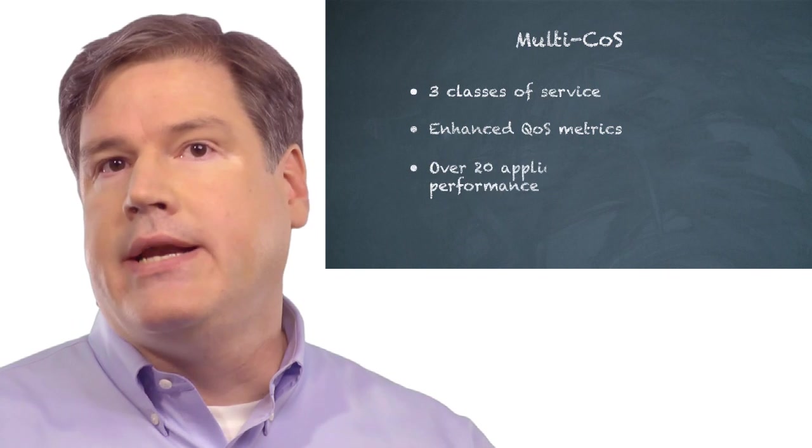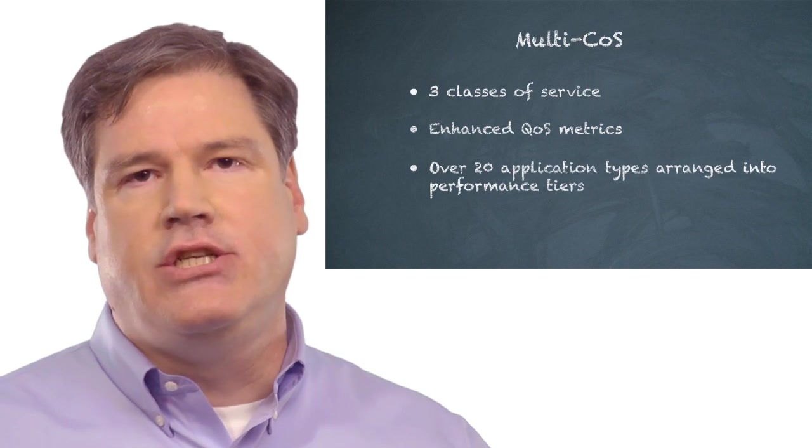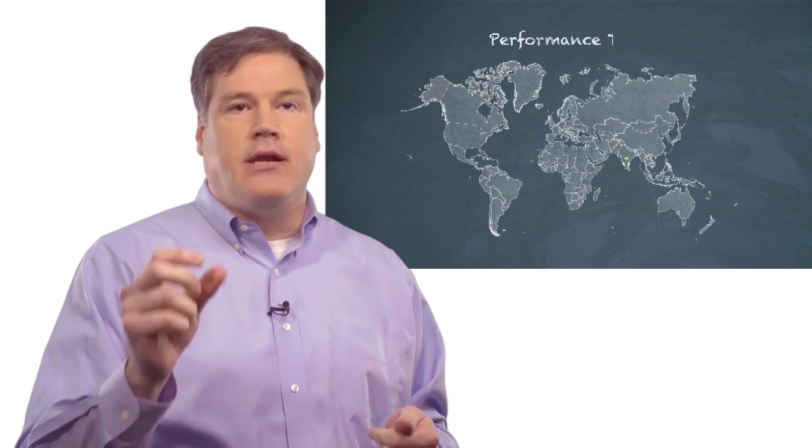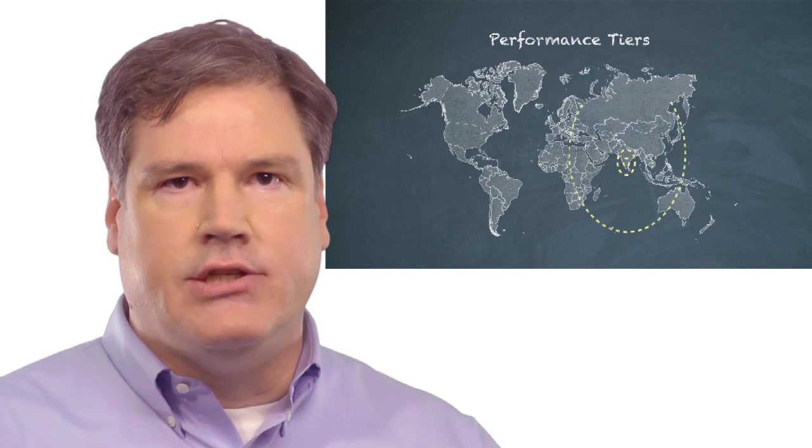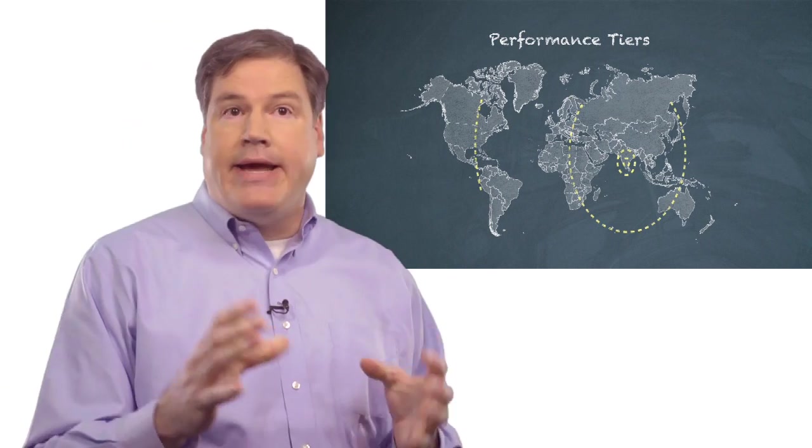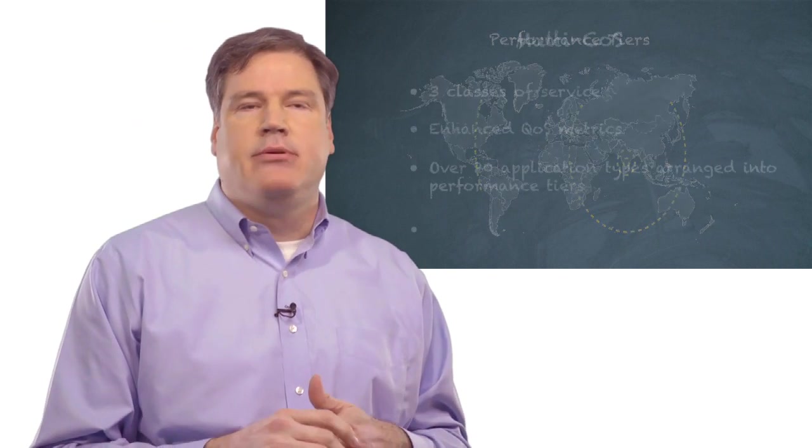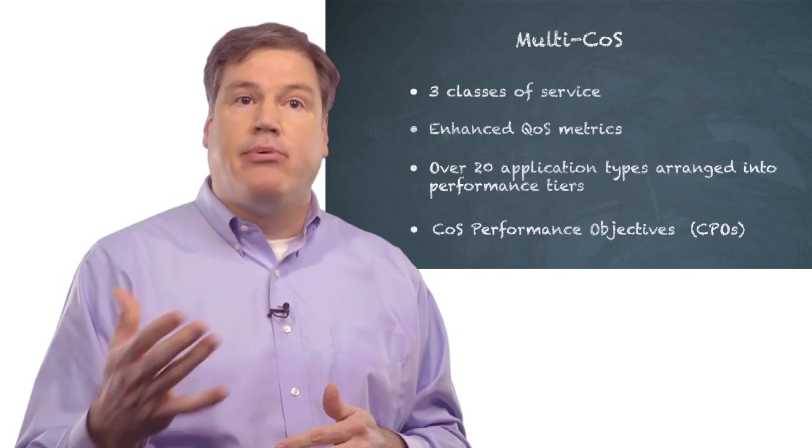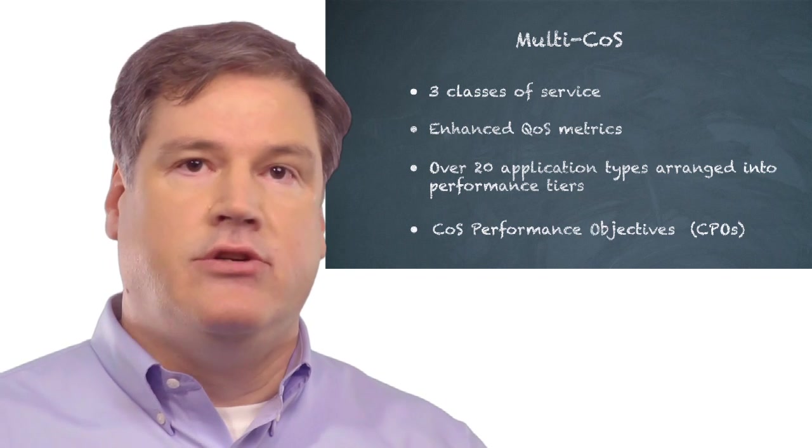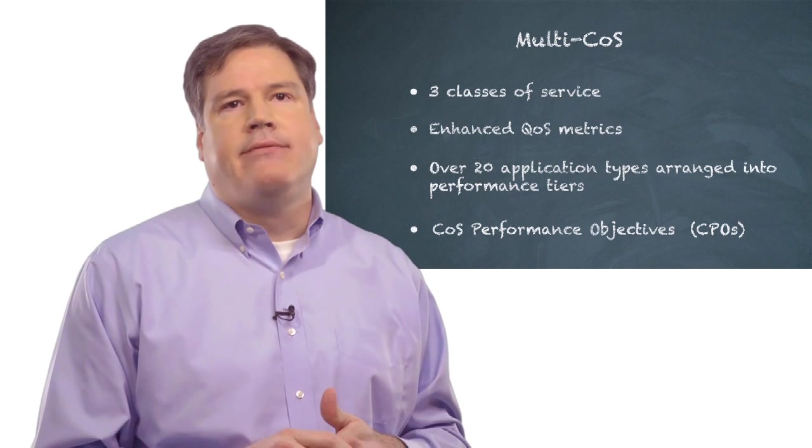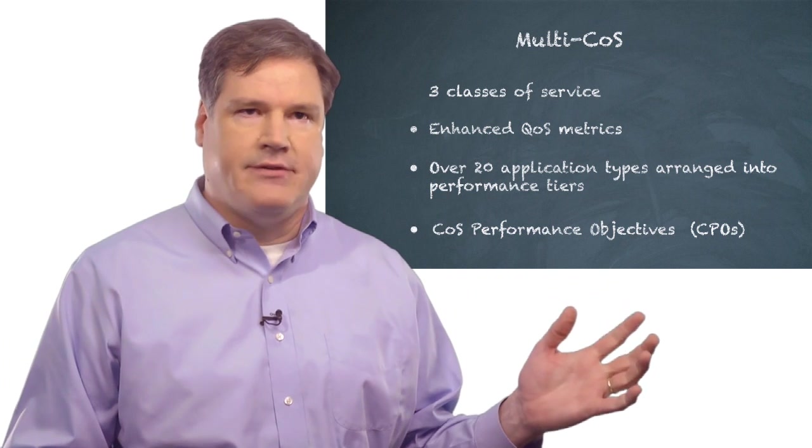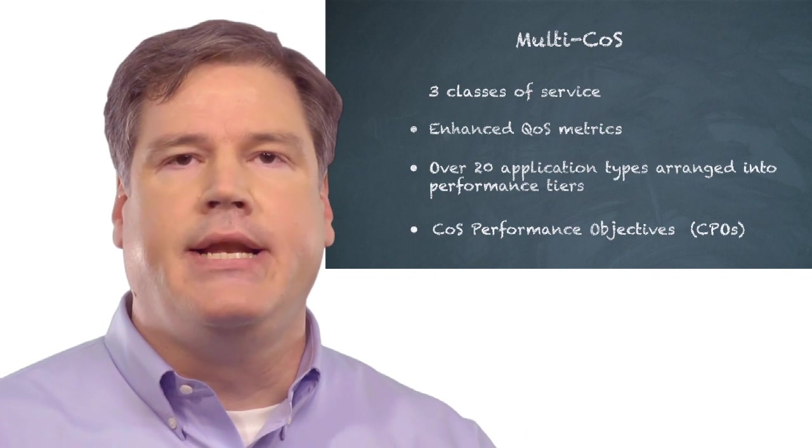These in turn are organized into 20 plus application types, which fit into various tiers, be they local, regional, national, and international in terms of their range and scope. And each of those tiers has performance attributes that are appropriate for a given service. For example, a regional VoIP service might have certain attributes that are different than an international video service. And these are all captured in MEF 23.